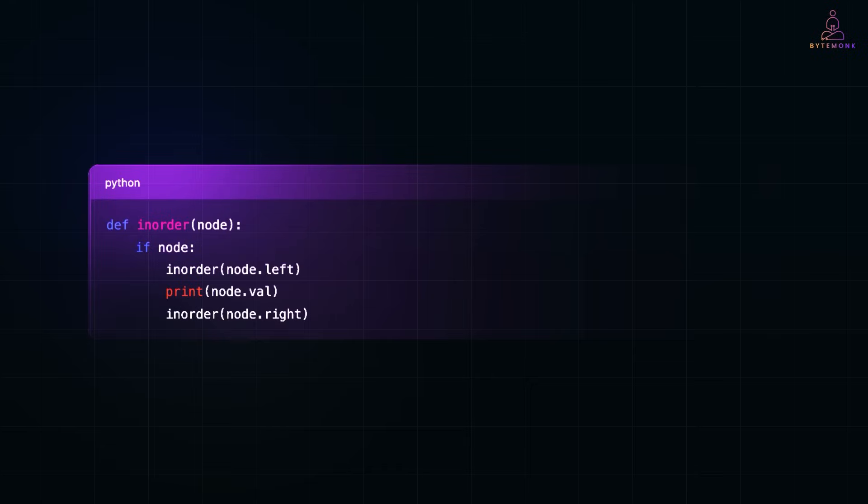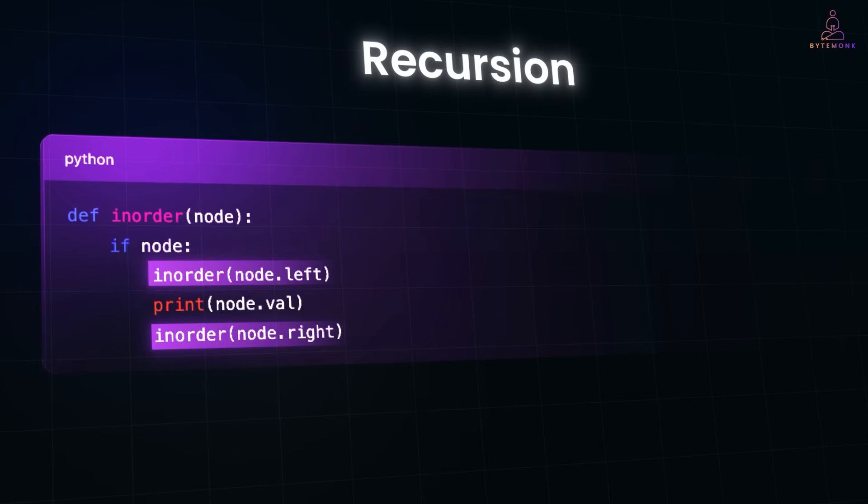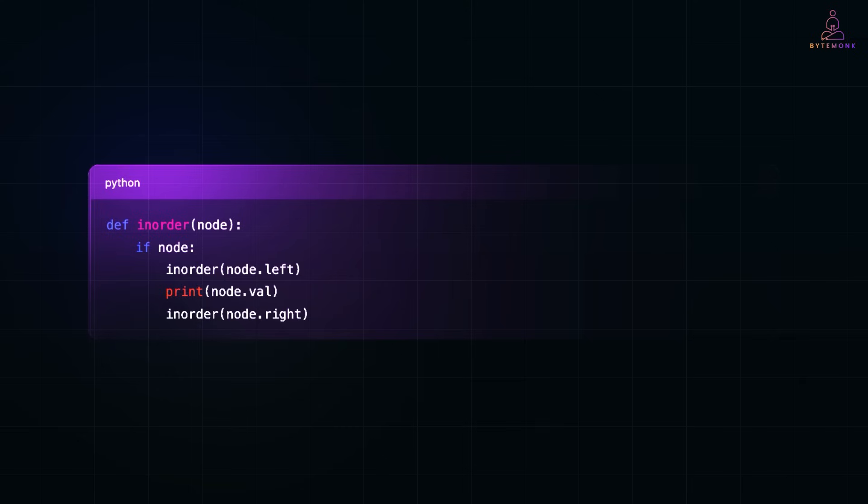Here is a simple in-order traversal in Python. And yes, most of these are done using recursion, where the function calls itself to handle left and right subtrees. We break the tree into smaller pieces, left and right subtrees, and trust the same logic to handle them.